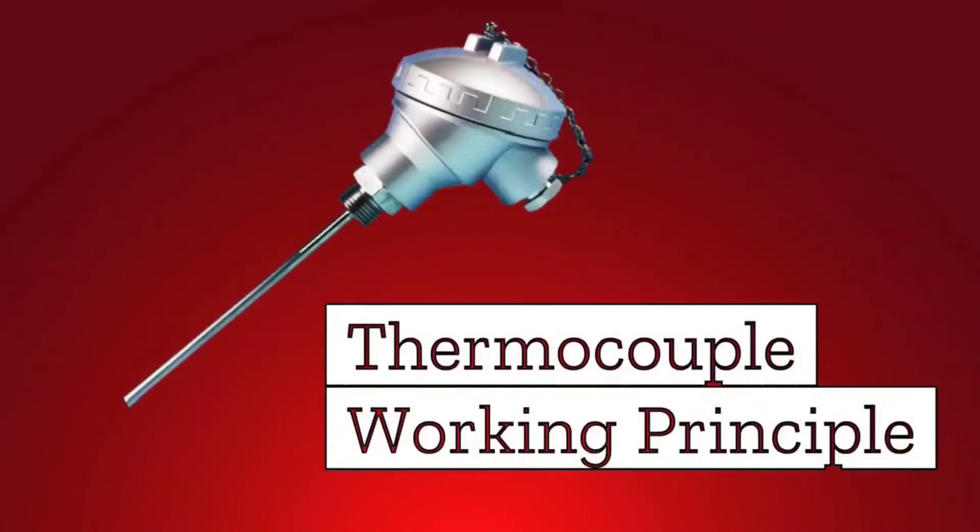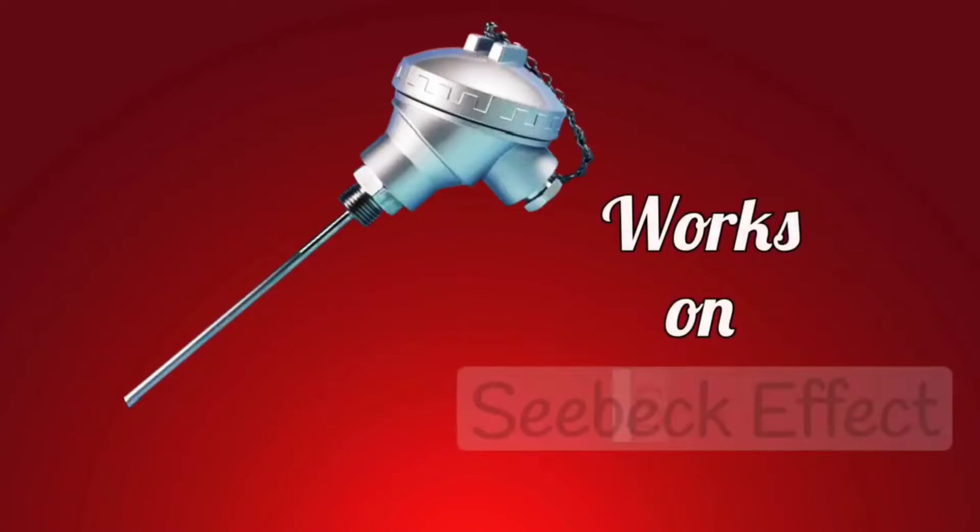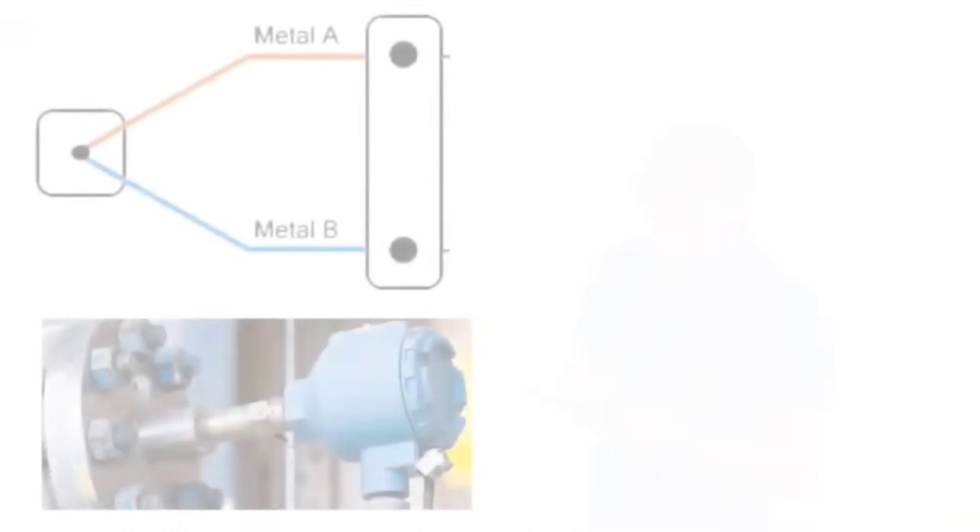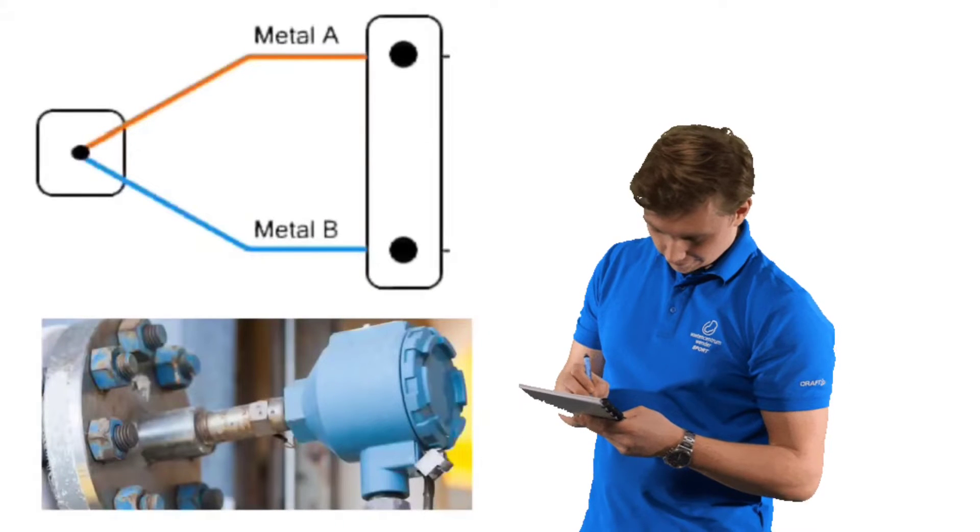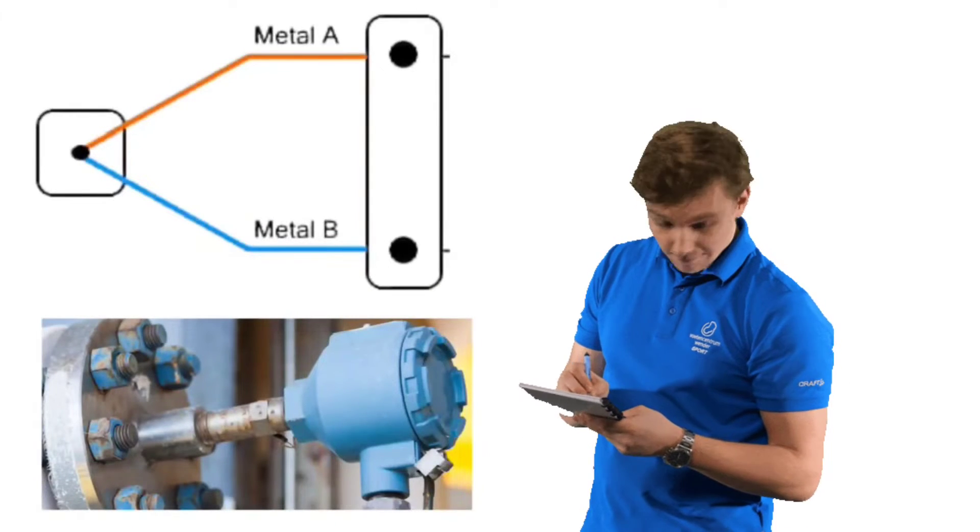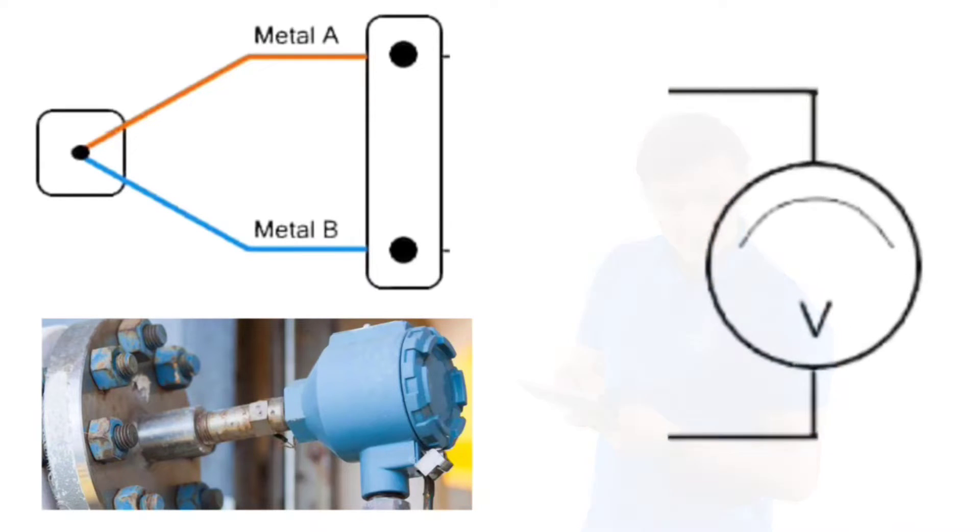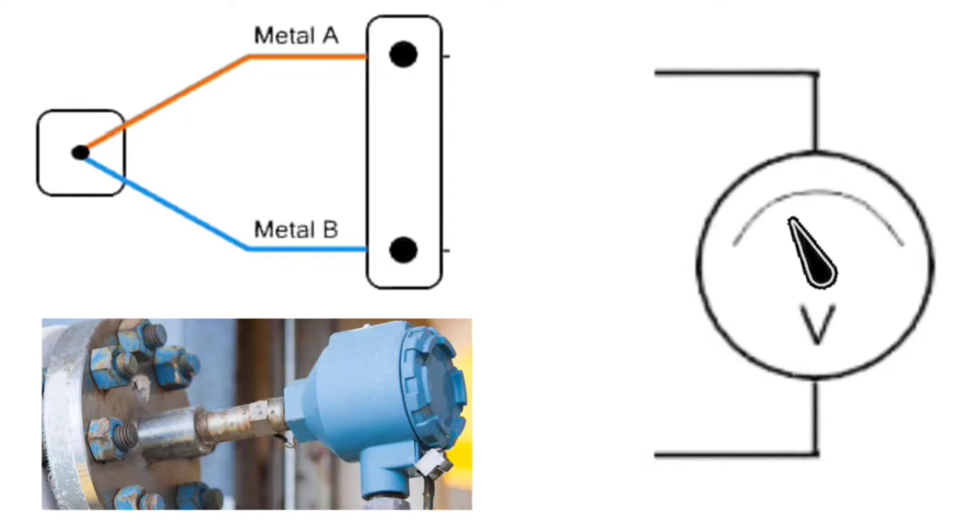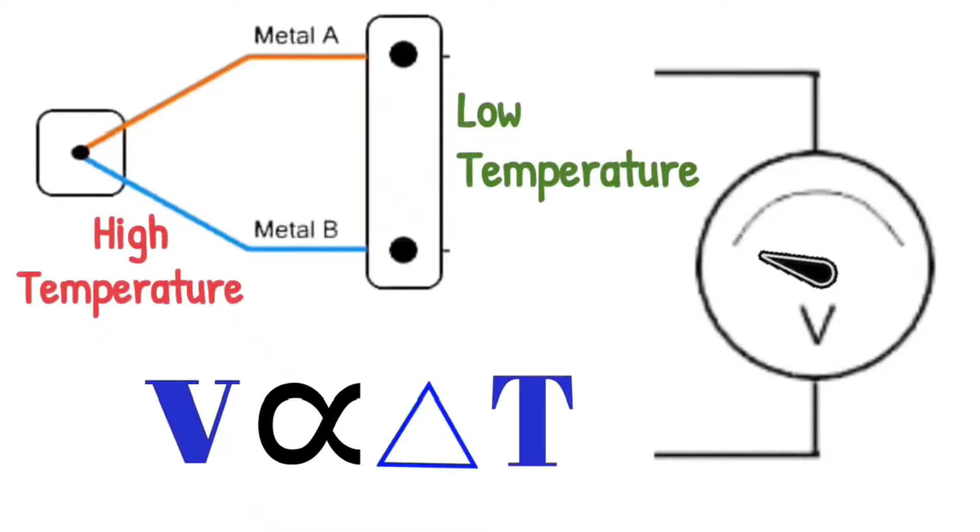Now let's understand the thermocouple working principle. Thermocouple works on Seebeck effect. When there is a temperature difference between the sensing junction and the other end, then a voltage is generated. This voltage is proportional to the temperature difference.